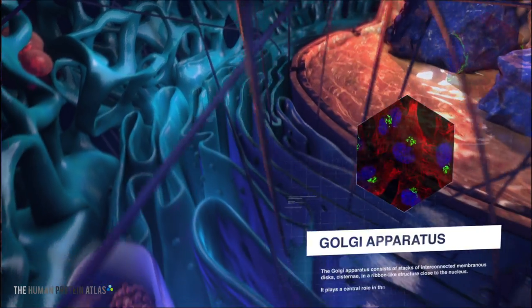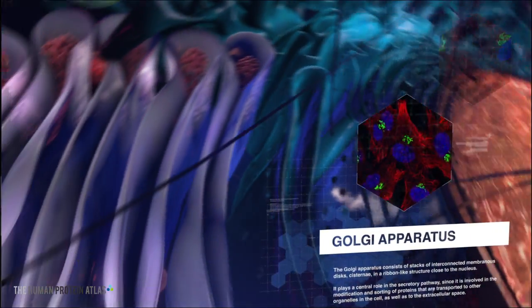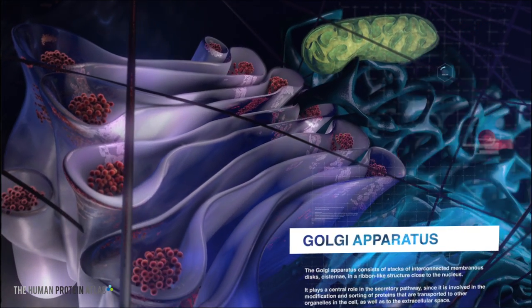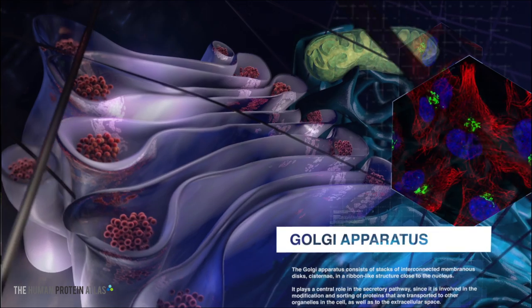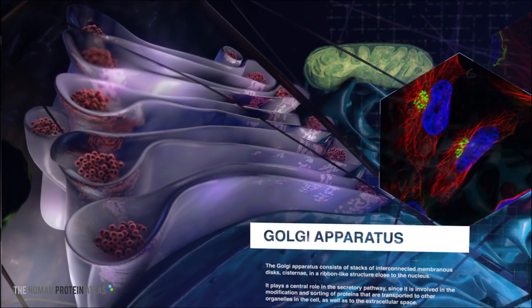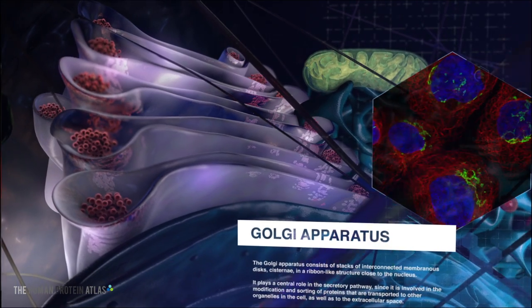The Golgi apparatus consists of stacks of interconnected discs called cisternae. This organelle plays a central role in the secretory pathway as it modifies and sorts proteins that are transported to other organelles in the cell, as well as to the extracellular space.